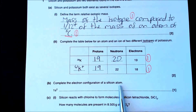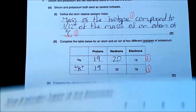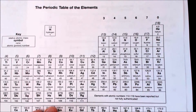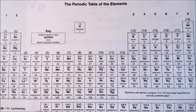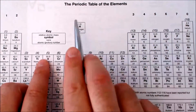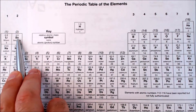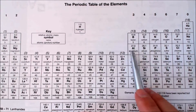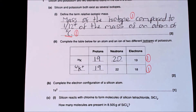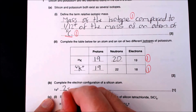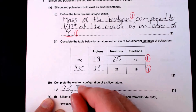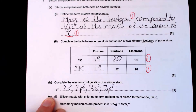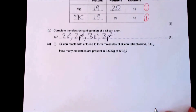The next part asks you to complete the electron configuration of a silicon atom. Using the periodic table, silicon's configuration is 1s² 2s² 2p⁶ 3s² 3p², because silicon is the second element along in the 3p block. That gets you the one mark available.